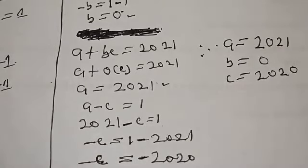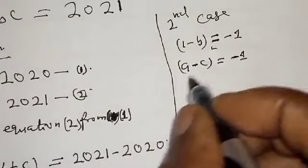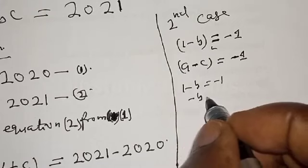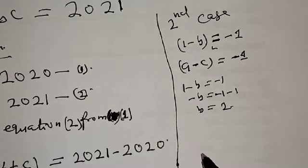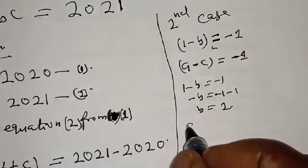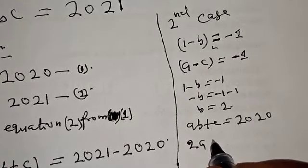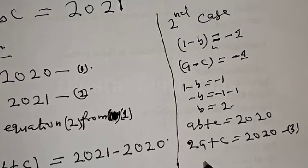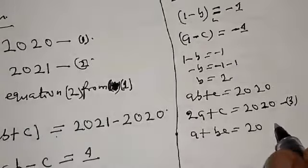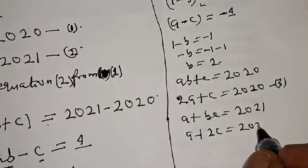Now for the second case: 1 minus B equals minus 1, so B equals 2. And A minus C equals minus 1. Substituting B equals 2 into equation 1: 2A plus C equals 2020 — call this equation 3. Substituting B equals 2 into equation 2: A plus 2C equals 2021 — call this equation 4.